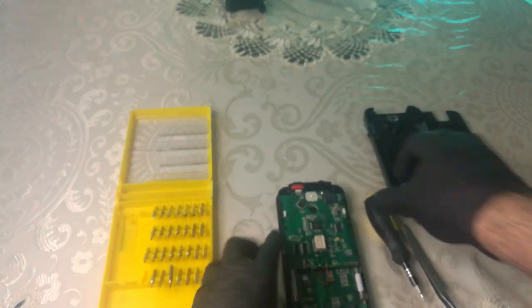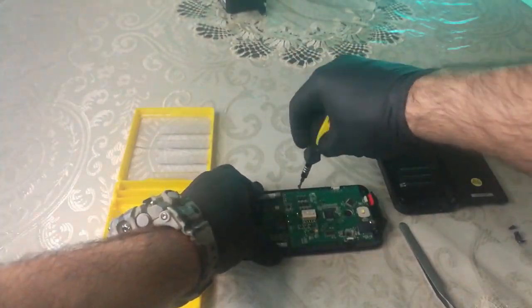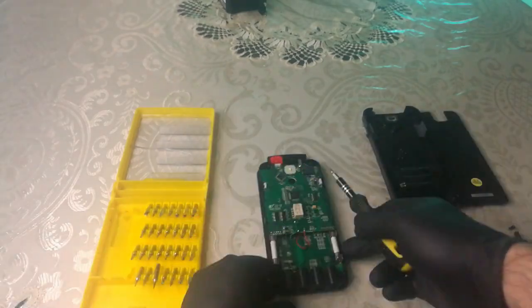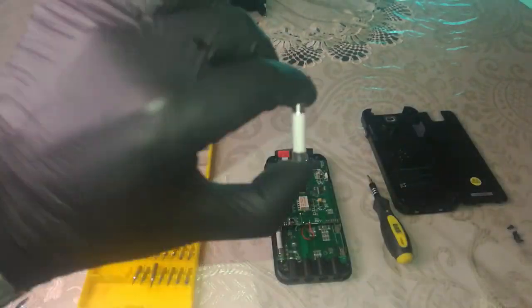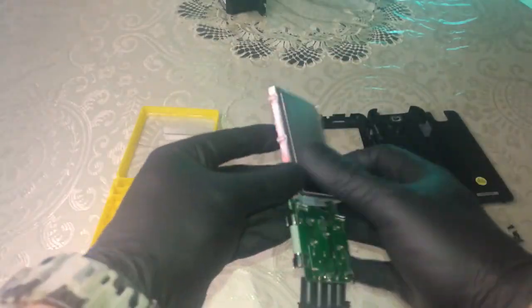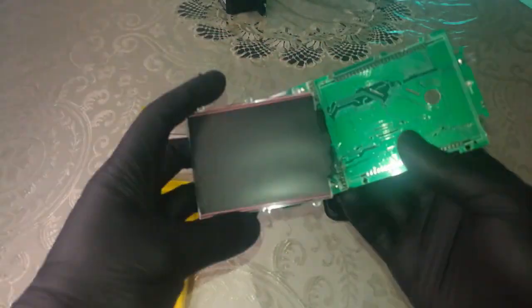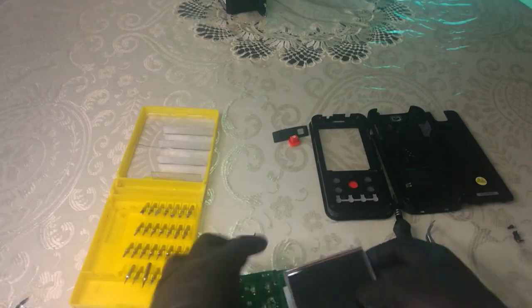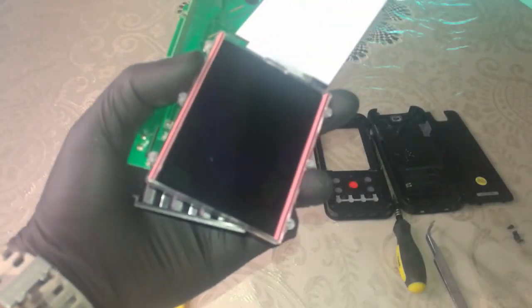Let's unscrew them and see what's behind the board. There it is. This white flat piece is the display backlight and this one is the LCD itself.